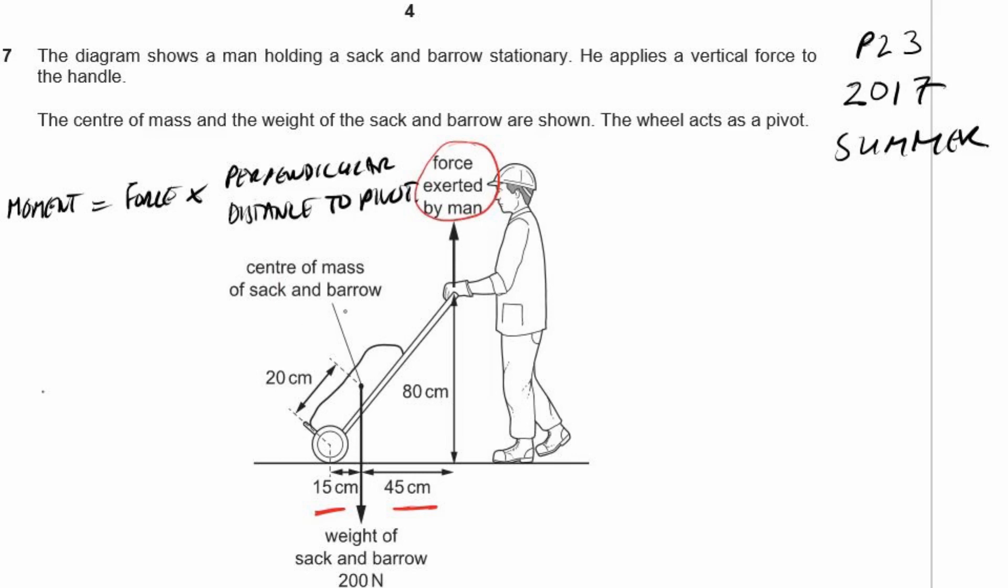Force upwards and force downwards. There we go. The weight of the sack and the barrel. Now, force times perpendicular distance to the pivot. What does that mean? That means we carry these lines of action of the forces. These lines are acting along. We draw them. We extend them until such a point as we have a 90 degree angle to the pivot. There we are. So we've got two 90 degree angles there.